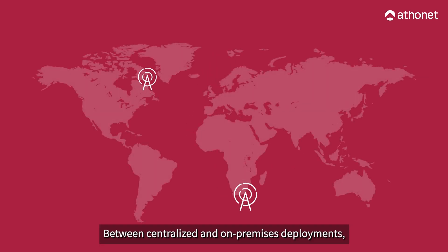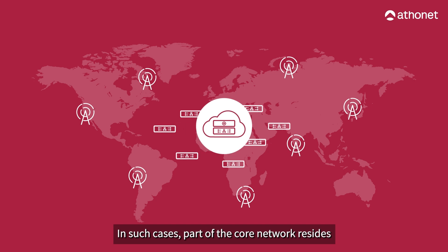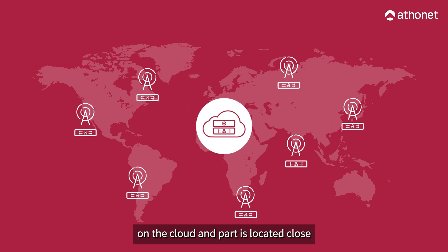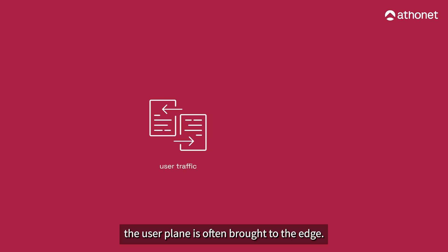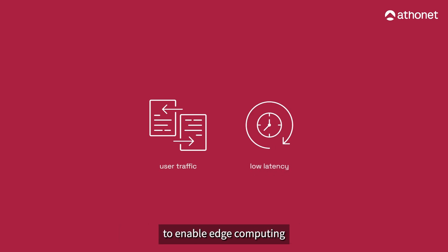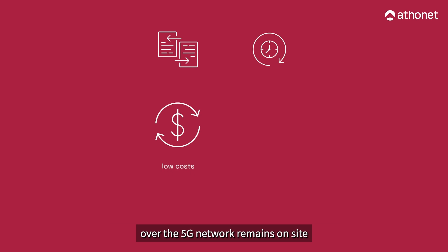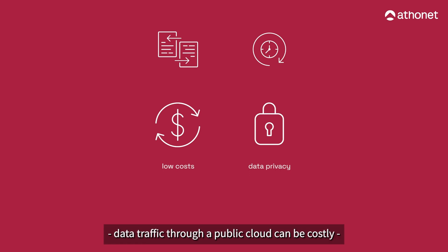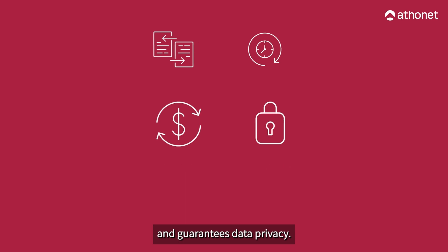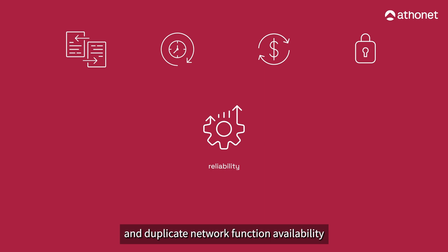Between centralized and on-premises deployments, there exists a variety of intermediate solutions that we can call hybrid deployments. In such cases, part of the core network resides on the cloud and part is located close to the radio access network at the edge of the network. In hybrid deployments, the user plane is often brought to the edge. This keeps user traffic local to enable edge computing and reduce communication latencies. In addition, all sensitive information exchanged over the 5G network remains on-site and never leaves the company's premises, which reduces certain costs and guarantees data privacy. Hybrid deployments can also be leveraged to introduce redundancy and duplicate network function availability to make the network more resilient and tolerant to failures.